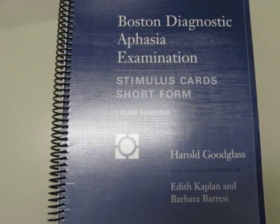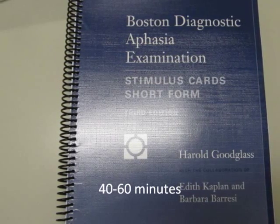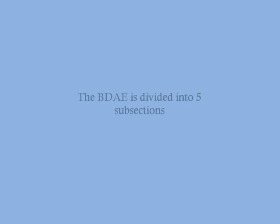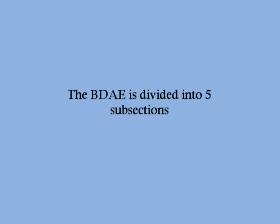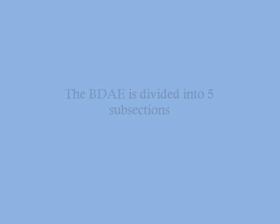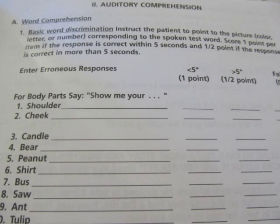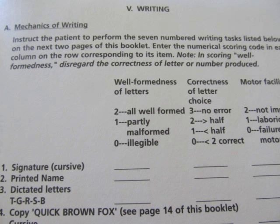The short form takes 40 to 60 minutes to administer and only includes a select few subtests. The BDAE is divided into five subsections: conversational or expository speech, auditory comprehension, oral expression, reading, and writing. There is also an additional apraxia assessment.